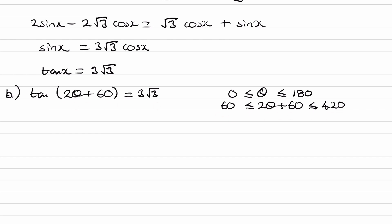Inverse tan of 3√3 gives us 79.11°. So that's our principal value, our first angle. 79.11°. Now tan graphs repeat themselves every 180 degrees. So we can just add 180° to this. That gives us 259.11°. And these would be our only two angles in the domain of 60° to 420°.